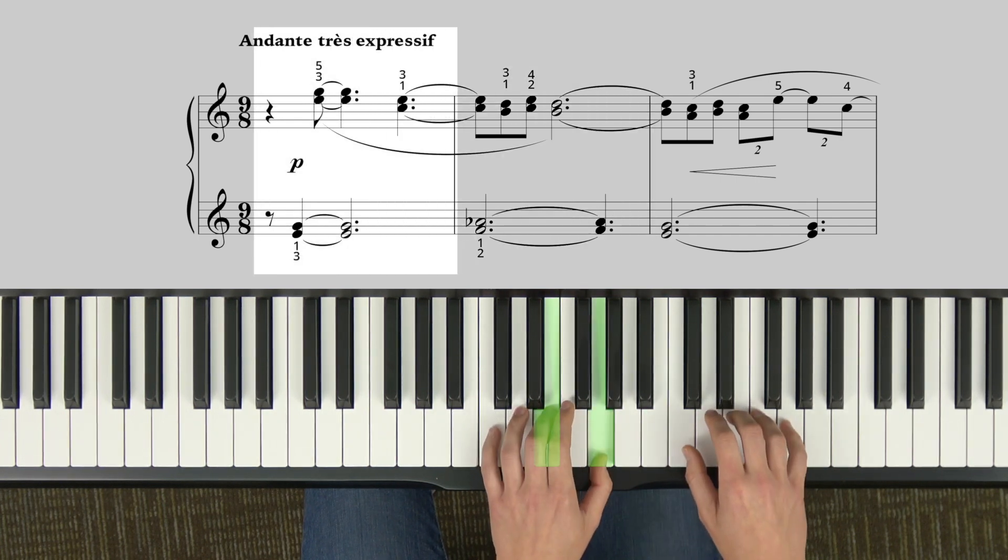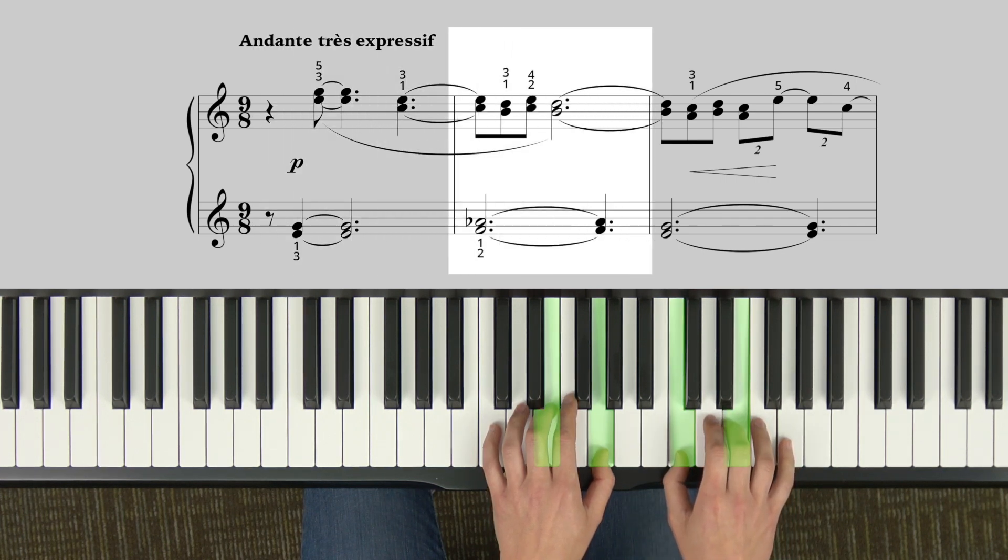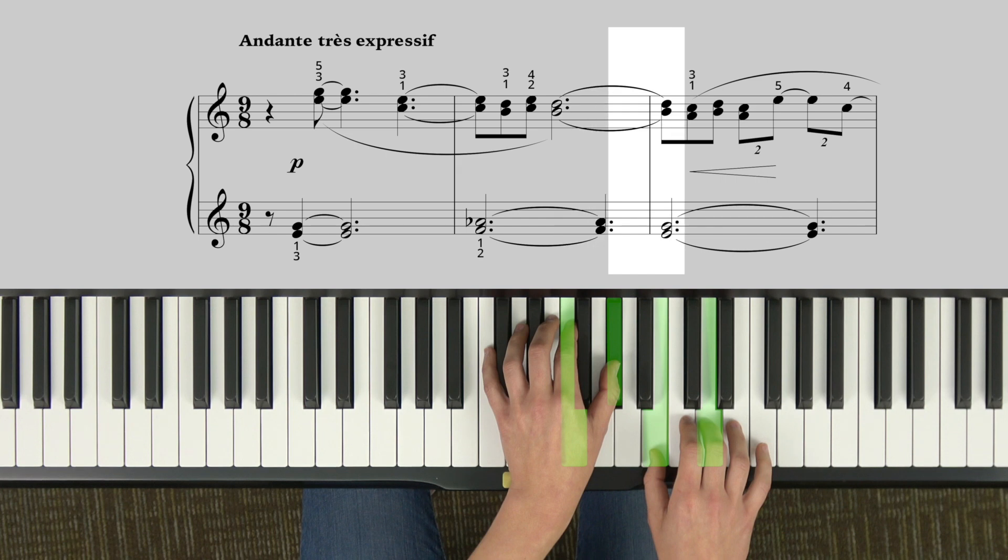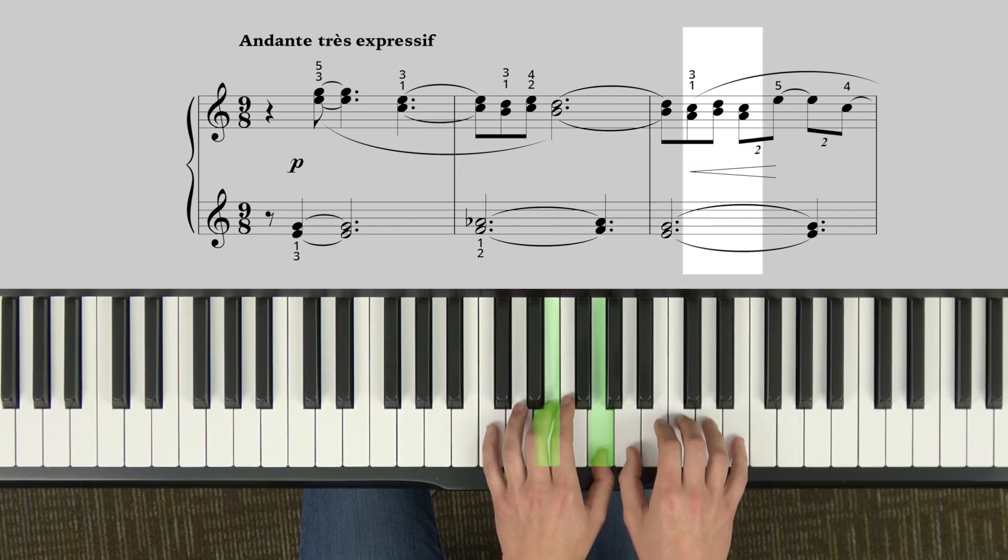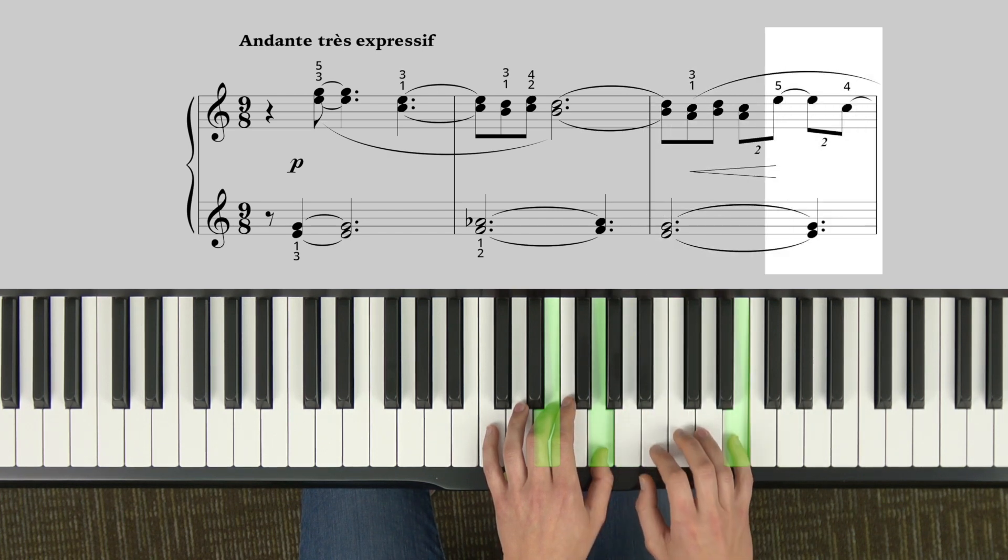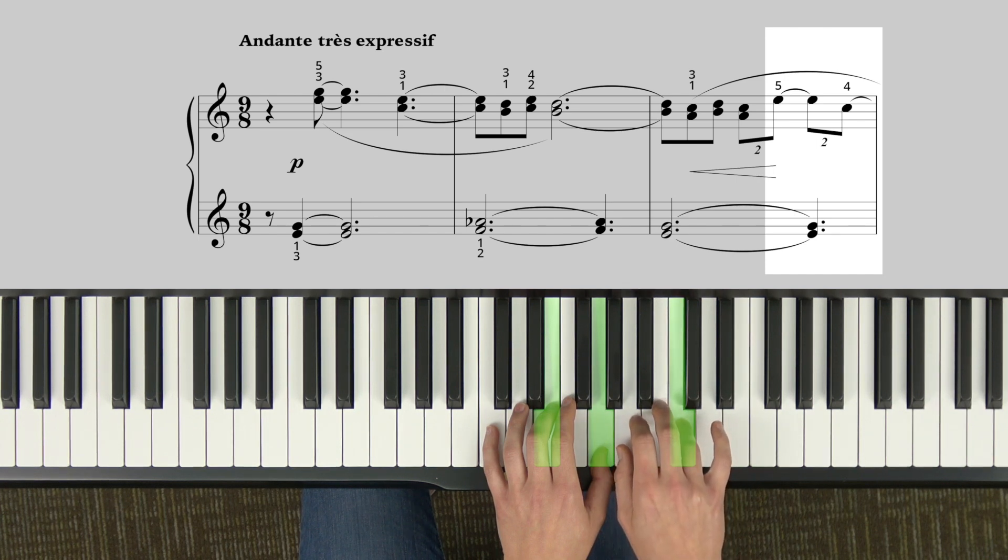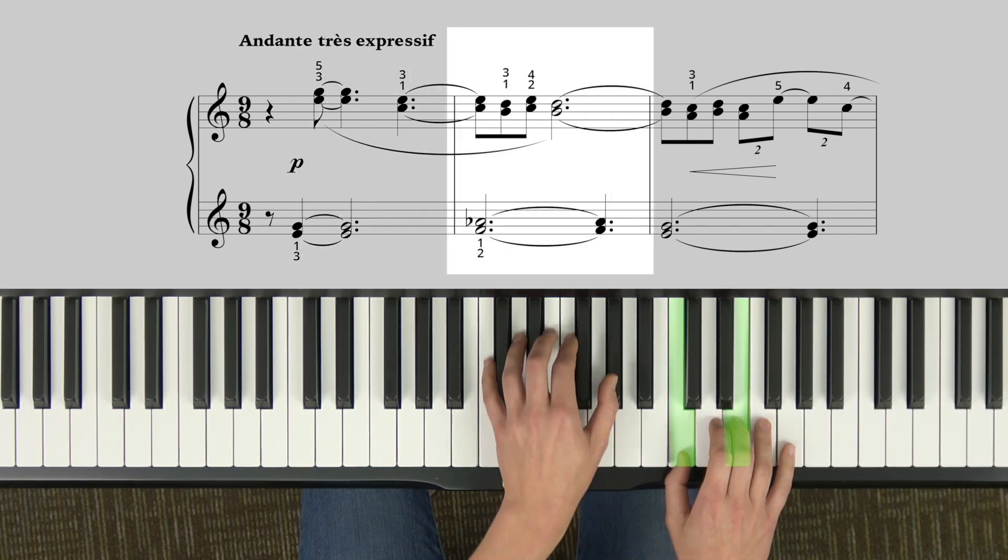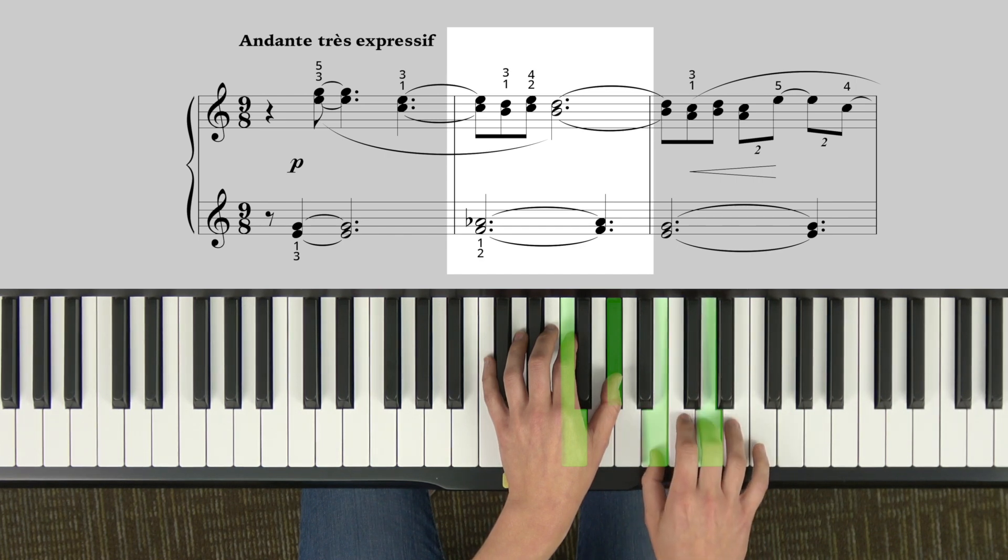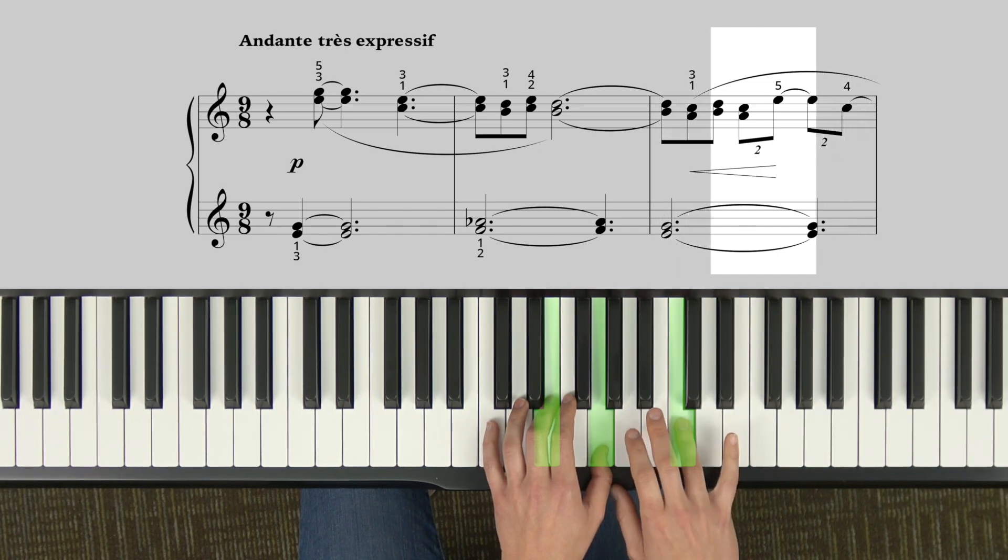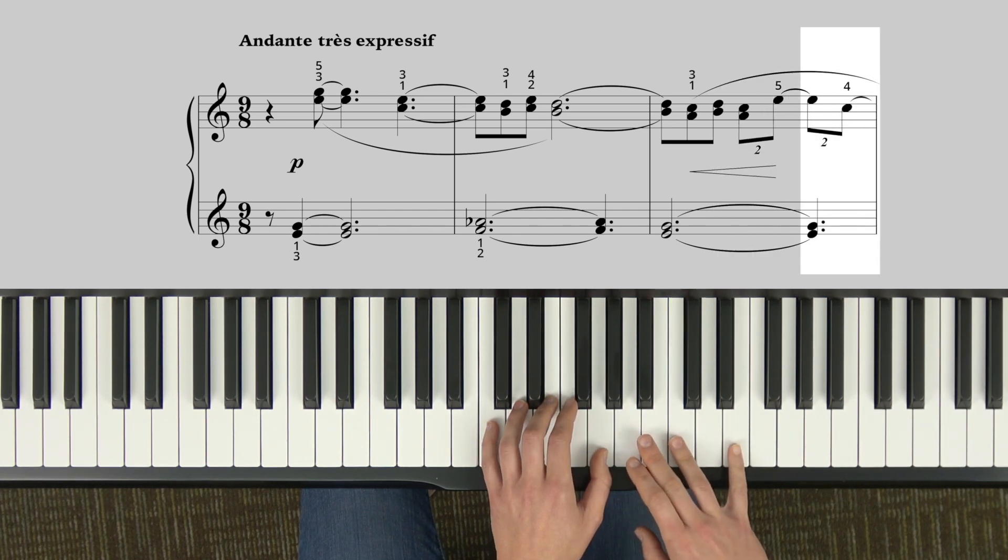So from the beginning, left hand plays. Thumb comes up to A flat. Left hand comes down to E and G. Right hand is the same thing. Comes down a step and plays parallel thirds again. Plus, five, four. So from the beginning. Five, four. Notice I'm playing E to C, so I'm skipping over that D with my forefinger.